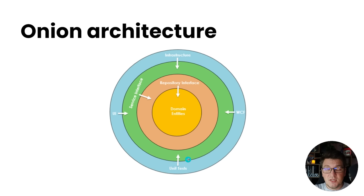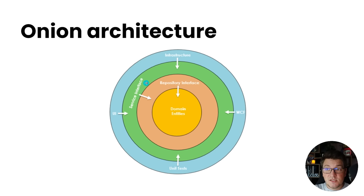The most important thing about the onion architecture — and you're going to see this in the clean architecture also — is the direction of dependencies. Notice how all of the layers are only pointing their arrows inwards: the repository interfaces reference the domain entities, the service interfaces reference the repository interfaces, and all of the components on the external ring reference the components inside. In the onion architecture you're also allowed to reference layers that are deeper inside.